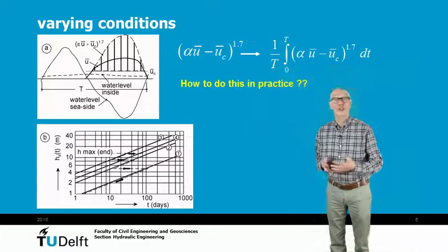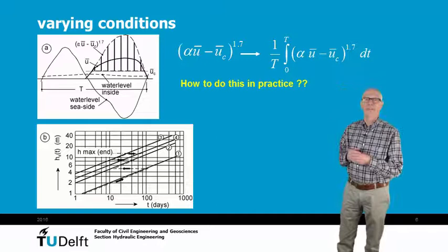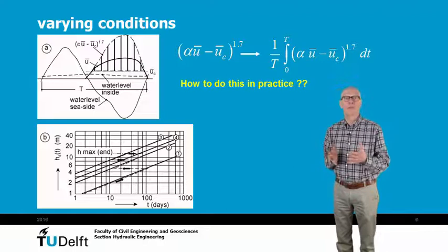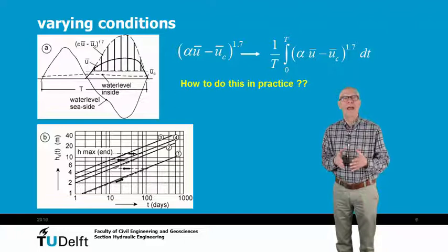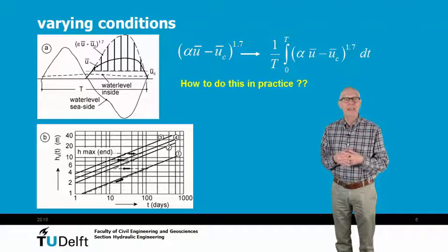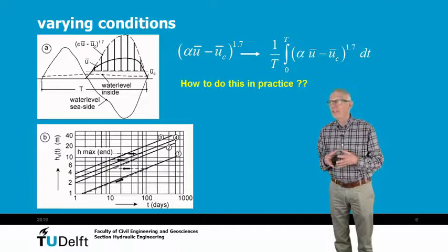In reality, the flow velocity is not constant, but it varies with the tide. In the top figure, you see the water level variation at the seaside and inside. This results in a more or less sinusoidal velocity distribution of the velocity. But relevant is the value of alpha u minus u critical. And we have to raise this to the power 1.7. This means you have to integrate this value over time.